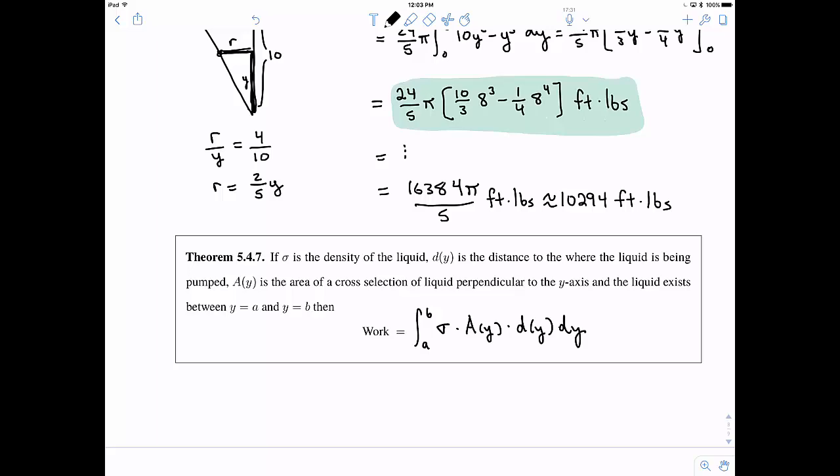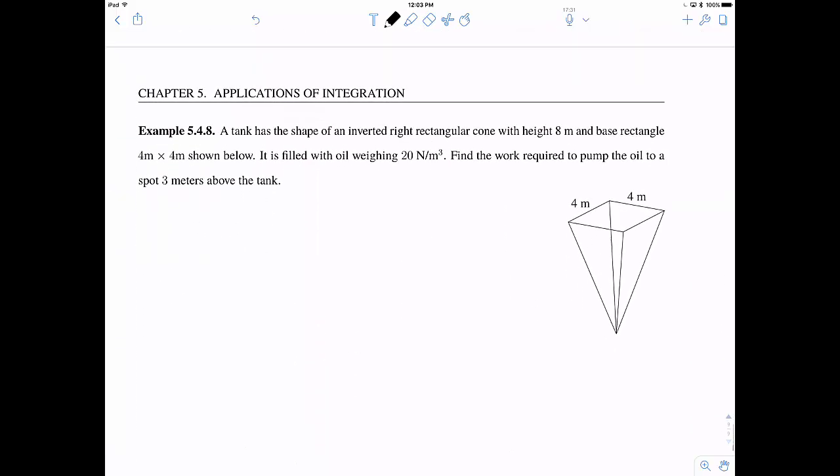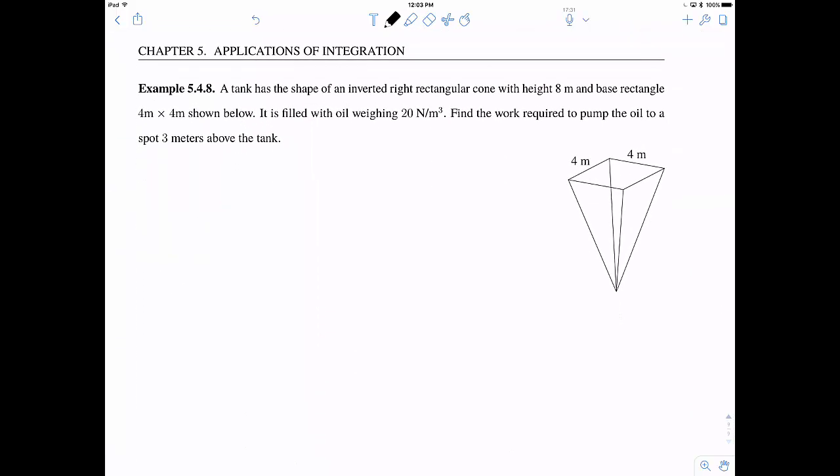Okay, so let's try to utilize this to solve one more example for us. So again, we have an inverted cone. This one's a kind of right rectangular cone. Height of 8 meters. And the base is a 4 by 4. So it's actually a square. So it's an even better rectangle. And it's filled with oil, this time weighing 20 newtons per cubic meter. And I want to find the work. And this is going to a spot 3 meters above the tank.